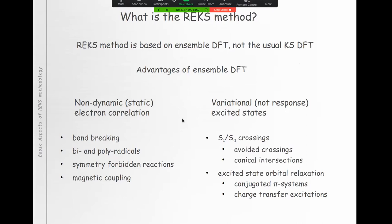Ensemble DFT is more similar to multi-reference methodologies in wave function theory. This ensemble representation offers a number of advantages. In particular, it provides accurate description of non-dynamic electron correlation, also known as static electron correlation, which is important for describing bond breaking, bi-radicals and poly-radicals, various symmetry-forbidden reactions, and magnetic coupling between open-shell centers, for example in metal complexes. This is for the ground states. For the excited states, it offers a way of obtaining variational, not response, excited states — pretty much like in state-average CAS-SCF or multi-state CAS-PT2 — which enables proper description of crossings, avoided crossings, and conical intersections. It also includes relaxation of the one-electron functions (orbitals) in the excited state, which is important for proper description of conjugated pi systems and charge transfer excitation.